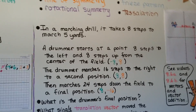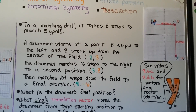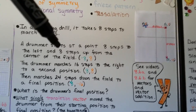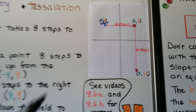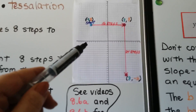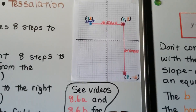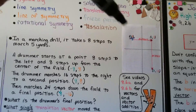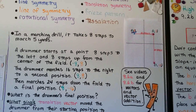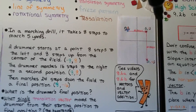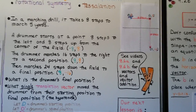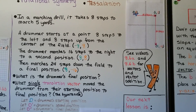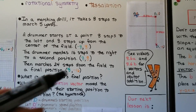In a marching band drill, it takes 8 steps to march 5 yards. A drummer starts at a point 8 steps to the left and 8 steps up from the center of the field. If the center of the field is the origin, the drummer starts at (-8, 8). The drummer then marches 16 steps to the right to a second position at (8, 8), and then marches 24 steps down to a final position at (8, -16).